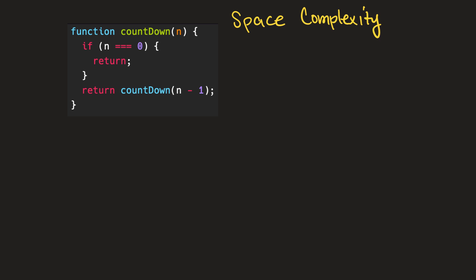To understand space complexity, we'll take this function into consideration. This is a recursive function that basically just returns a call to itself with its input n minus one, and it's going to do this until we reach a base case where n equals zero, and then it's going to return and the function will be complete.